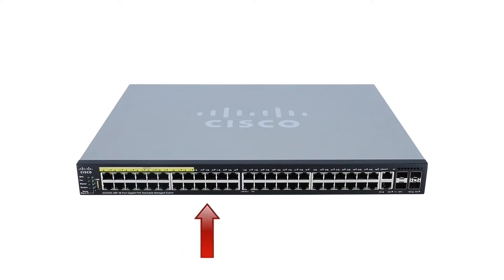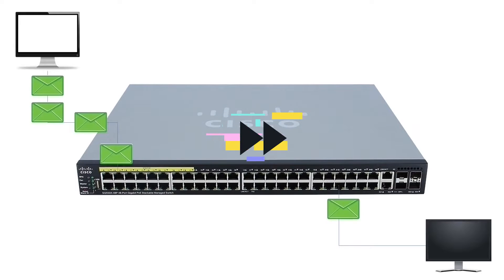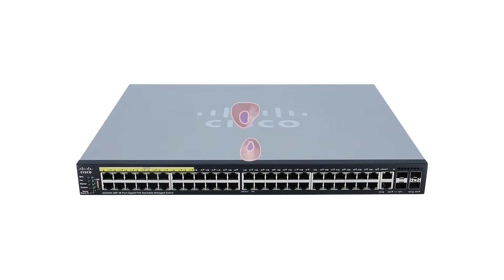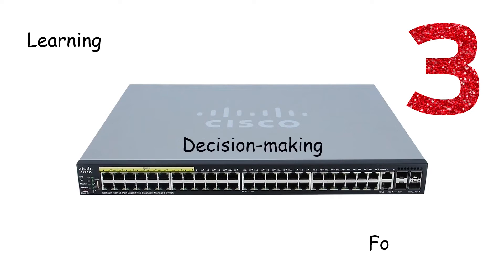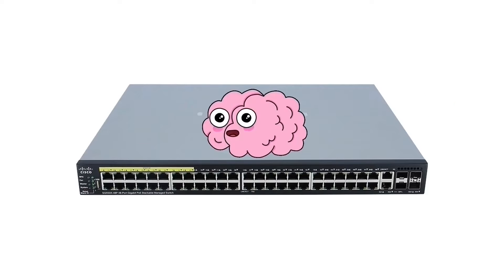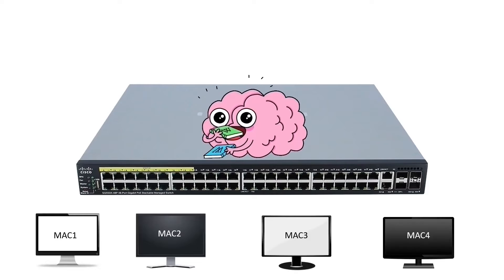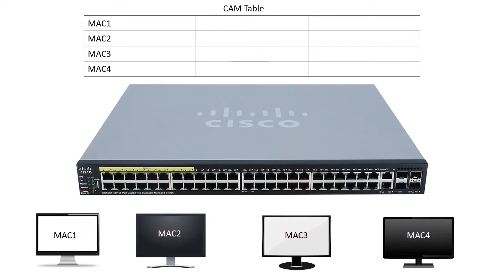A switch has many ports. It forwards an incoming frame only from the port connected to the destination device of the frame. We can divide this process into three phases: learning, decision-making, and forwarding. In the learning phase, a switch learns the addresses of all connected devices and saves them into a table known as the CAM table. It uses incoming frames to learn the addresses.